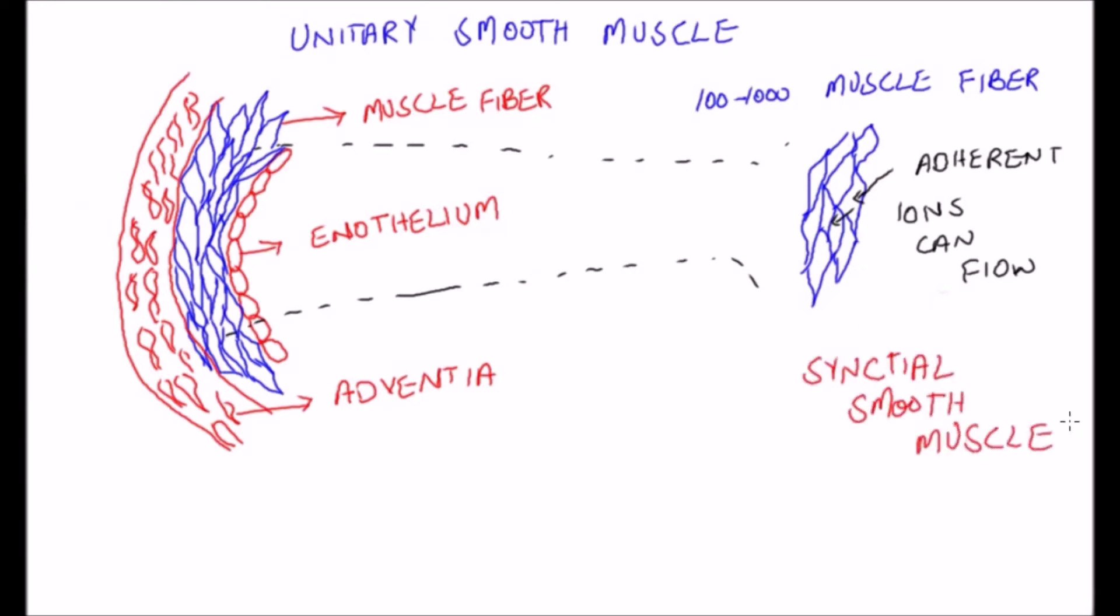It is found in the walls of most viscera of the body: gastrointestinal tract, bile ducts, urethras, uterus, and many blood vessels.